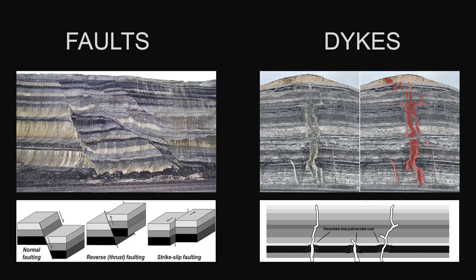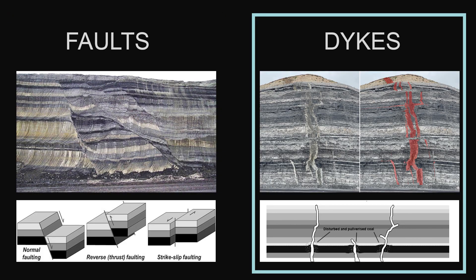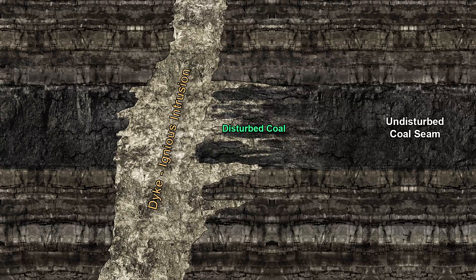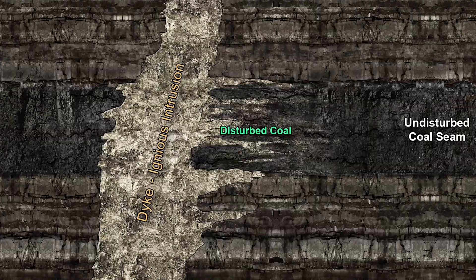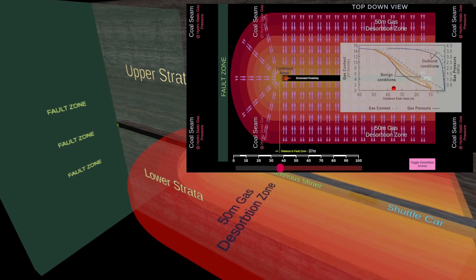Increases in coal seam gas content and pressure may be present in areas of geological disturbance of the coal seam, such as faults or dikes. A fault is normally where there is a disturbance in the coal seam resulting in a seam displacement, and a dike is where high-pressure igneous material has been forced through the coal seam and the surrounding strata. These geological disturbances not only increase the gas content and pressure of the coal but destroy the normal coal structure which allows the gas to permeate through the coal and reduce the gas pressure.